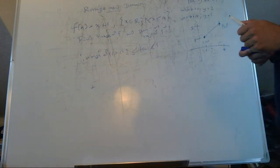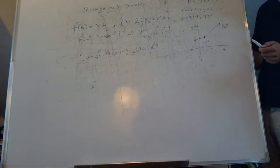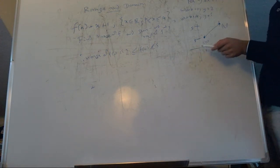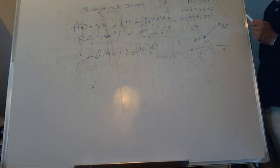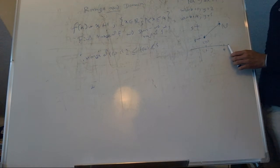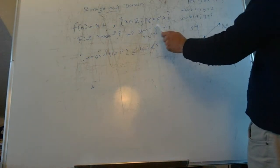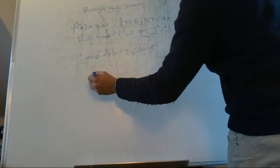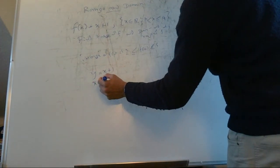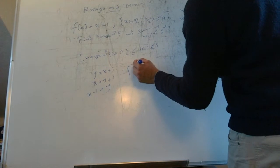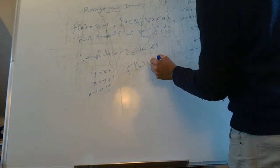The domain is the values of x where the function is defined — here between 1 and 4 — and the range is the corresponding values of y, between 2 and 5. To find f inverse: from y equals x plus 1, swapping gives x equals y plus 1, so f inverse of x equals x minus 1.